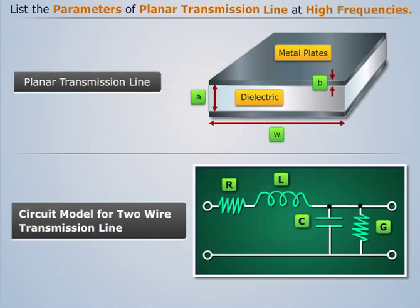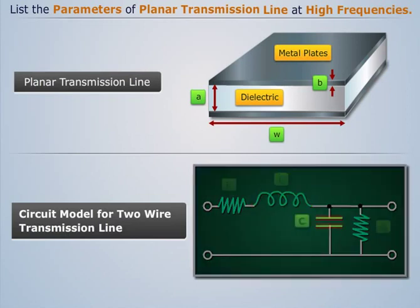We know that any transmission line can be represented by a circuit model, consisting of an inductor, capacitor, shunt conductor, and series resistor.